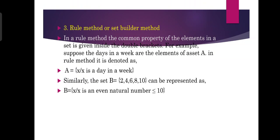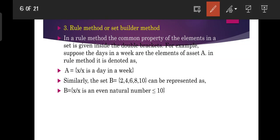Similarly, the set B = {2, 4, 6, 8, 10} can be represented in set builder form as B = {x | x is an even natural number less than or equal to 10}. Here the elements in the curly brackets all correspond to even natural numbers. This is one of the three methods for representing sets.